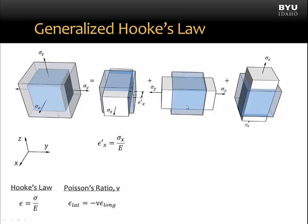Now let's consider the strain in the X direction when our stress is in the Y direction. When we put a normal stress in tension on the element, the element will get longer in the Y direction, but the strain in the X direction will be negative — this is a lateral strain. We can see from the Poisson's ratio equation that the strain in the X direction from a stress in the Y direction is minus Poisson's ratio times the longitudinal strain, which is simply sigma Y divided by Young's modulus according to Hooke's Law.